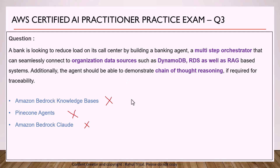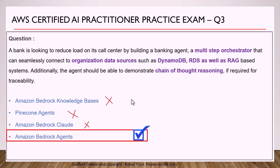Amazon Bedrock Agents is the correct option. Amazon Bedrock Agent is a multi-step orchestrator that can execute multiple steps based on the user's question, powered by a large language model. It can connect to organization data sources such as DynamoDB and RDS, and it can also connect to RAG-based systems such as Amazon Bedrock Knowledge Bases. Finally, it can demonstrate chain-of-thought reasoning, which is very important from an explainability perspective.